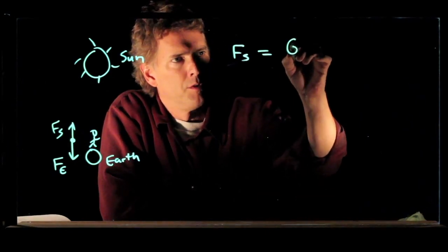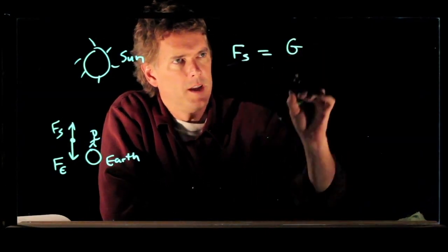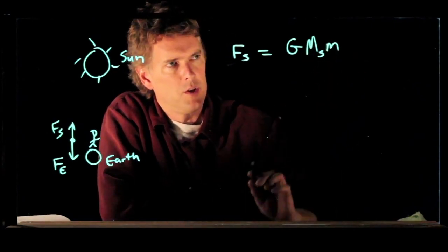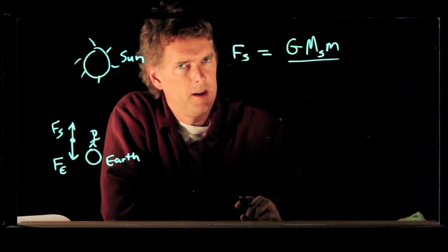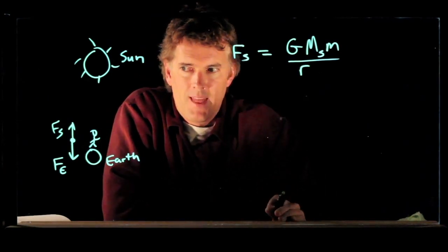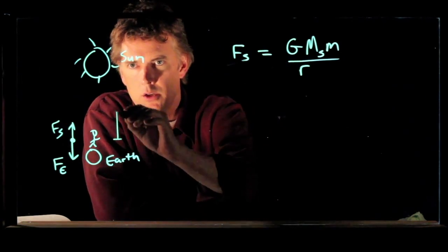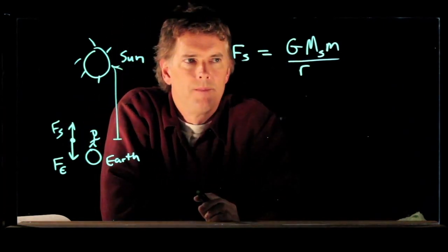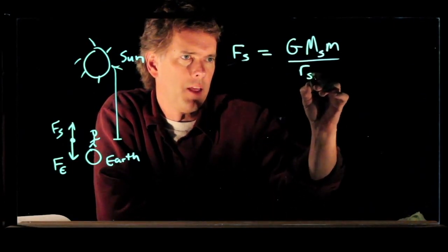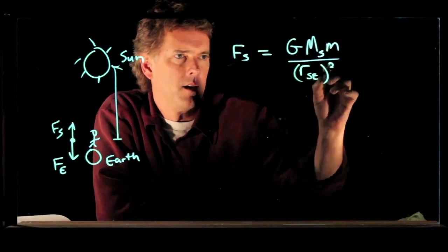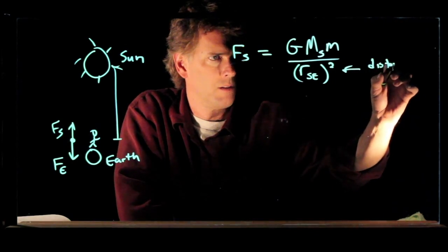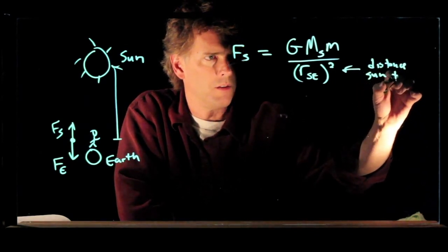So the force due to the sun on you is G mass of the sun times your mass divided by the distance squared. But that distance is between you and the sun, and so that is roughly the same as between the sun and the earth. And so we will call that RSE. And this is the distance from the sun to the earth.